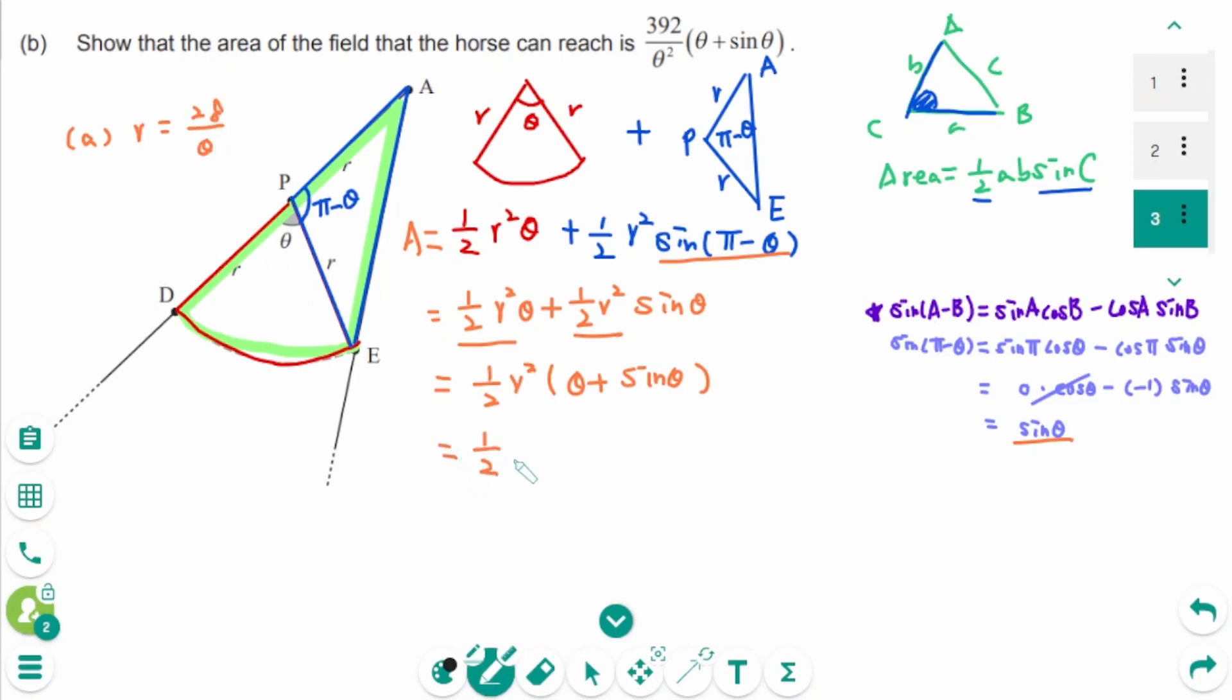Then 1 over 2 times R squared, which is 28 over theta squared, times theta plus sin theta. This equals 1 over 2 times 784 over theta squared times theta plus sin theta.